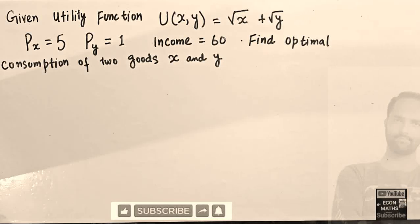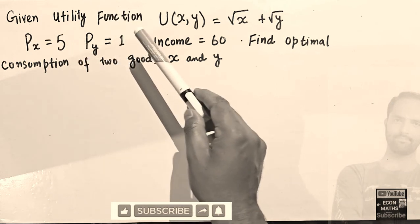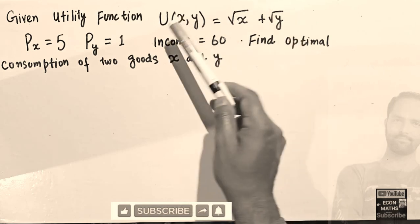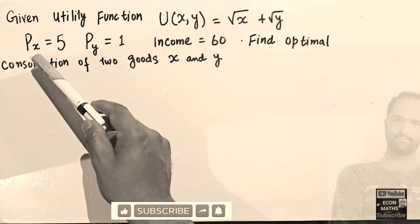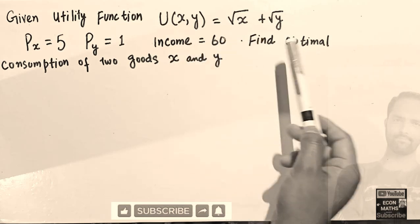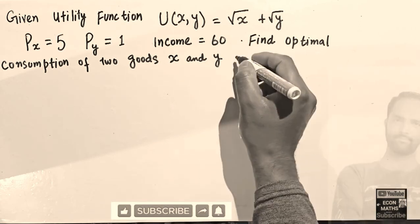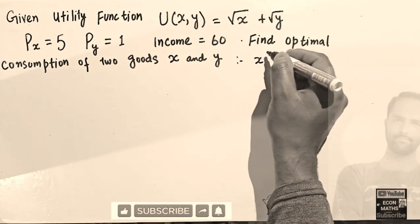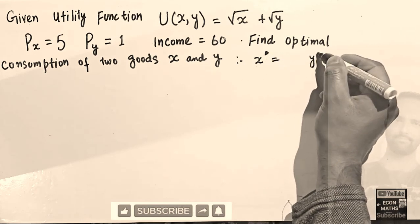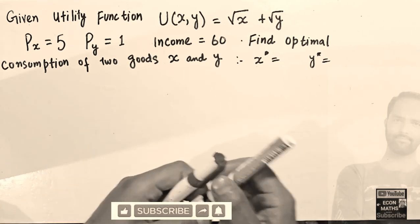Let us solve a question on constrained optimization in economics. The given utility function is u(x,y) = √x + √y, where x and y are two goods. The price of good x is 5, price of good y is 1, and income is 60. We have to find the optimal consumption of the two goods — how many units of x and y the consumer will consume at optimum.